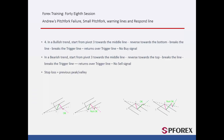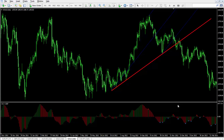In a bearish trend, if a price passes the trigger line towards the top, it reverses its direction towards the bottom after crossing the trigger line, followed by a reversal trend. Even if the price rises higher than the trigger line, then a buy signal would not be reliable anymore. In the previous example, candles could be formed above the trigger line, so a sell signal is valid.